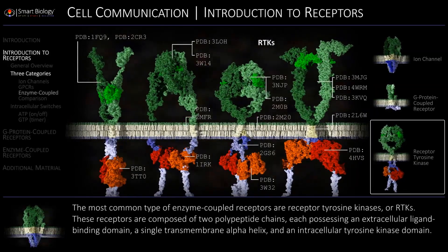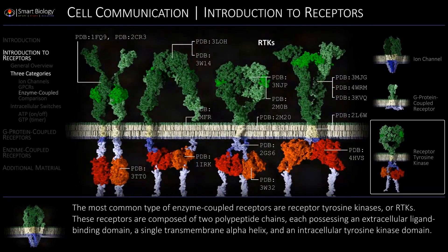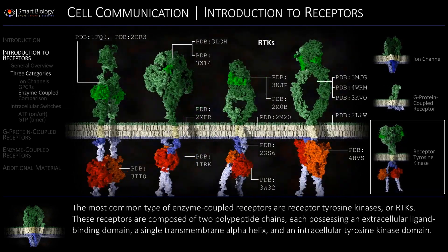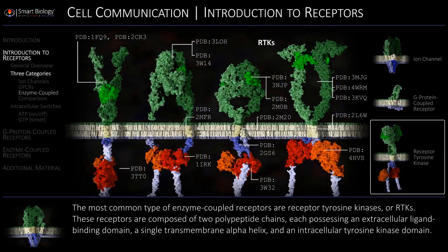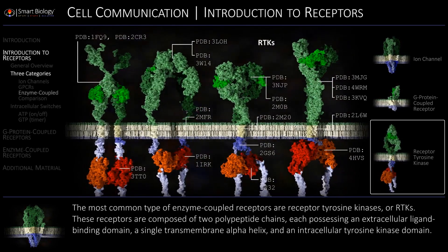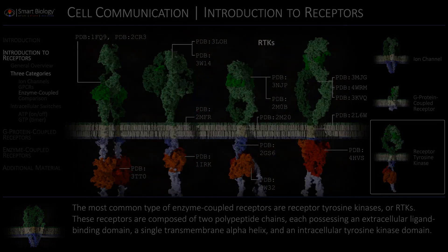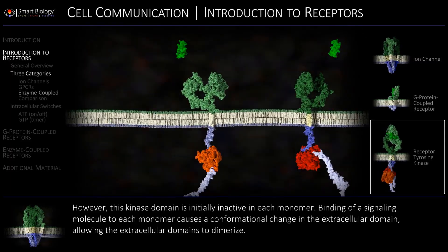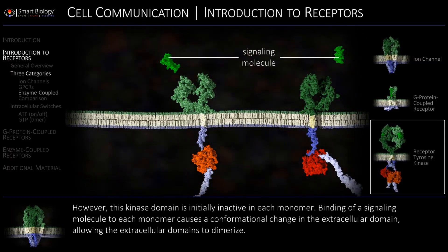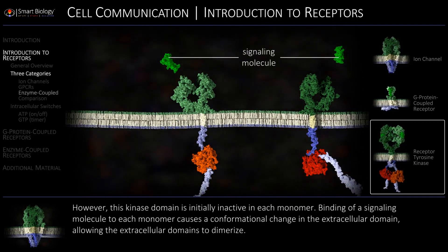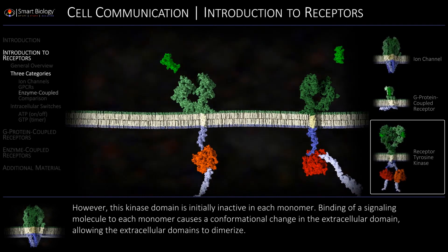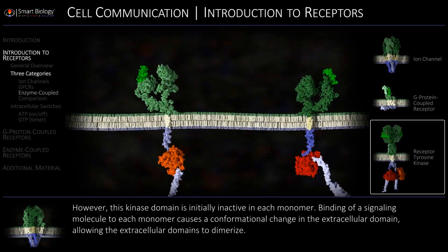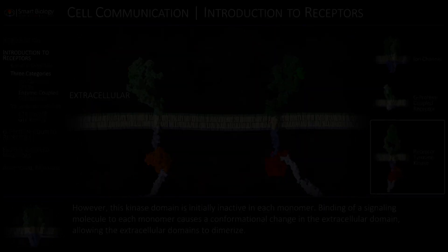The most common type of enzyme-coupled receptors are receptor tyrosine kinases, or RTKs. Binding of a signaling molecule to each monomer causes a conformational change in the extracellular domain.